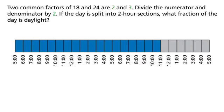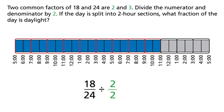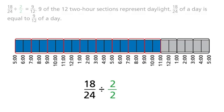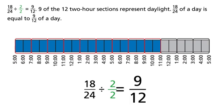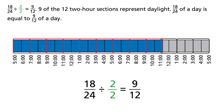Two common factors of 18 and 24 are 2 and 3. Divide the numerator and denominator by 2. If the day is split into 2-hour sections, what fraction of the day is daylight? 18 24ths divided by 2 halves equals 9 12ths. Nine of the 12 2-hour sections represent daylight. So 18 24ths of a day is equal to 9 12ths of a day.